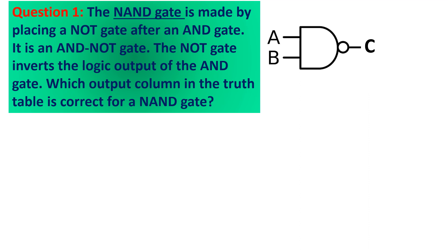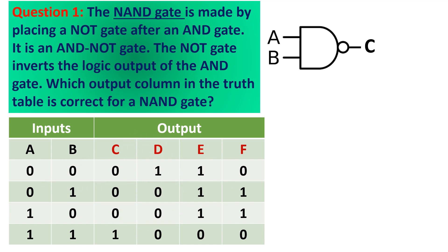That circle represents the symbol for a NOT gate. It is an AND-NOT gate, meaning a combination of an AND gate and a NOT gate. The triangular symbol for a NOT gate is no longer shown; instead, we just represent the NOT gate with that circular symbol attached to the AND gate symbol. The question is: which output column in the truth table below is correct for a NAND gate? The truth table has two inputs A and B, with all four possible conditions given.